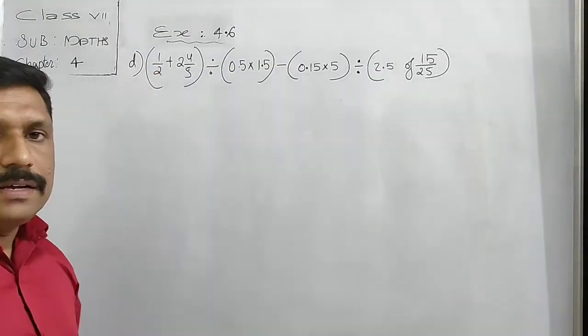Similarly for the subtraction part, 0.75 divided by 1.50 — we also multiply by 100 to get 75 divided by 150. Now the two divisions: 330 divided by 75. Doing the division: 4 times 75 is 300; remainder 30, then 300 again — so we get 4.4. And 75 divided by 150: we can see it is 0.5.